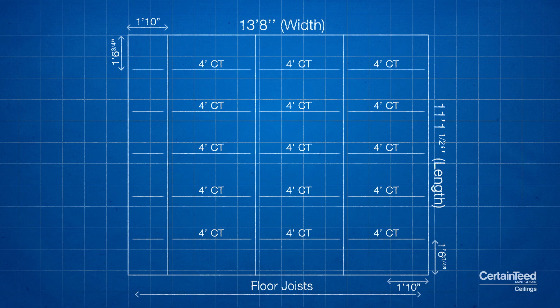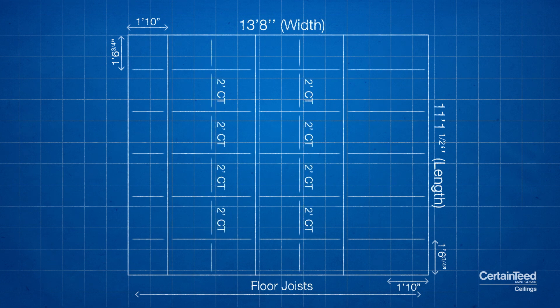You now have drawn all of your 4 foot cross tee locations. Now that you have completed your 4 foot cross tee locations, draw a line at the midpoint of each 4 foot cross tee, perpendicularly. This locates your 2 foot cross tees. You are now ready for your final calculations.